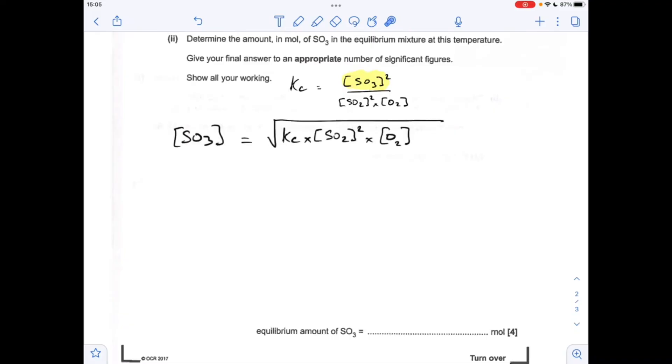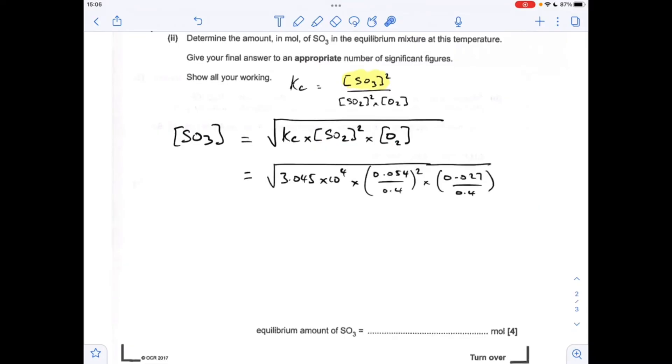Rearranging for SO3 concentration, we get the square root of Kc times the SO2 concentration squared times the O2 concentration. Now remember, in the information in the question, we were told the moles of SO2 and O2, not the concentration. So you can see here I've got the moles divided by the volume. Remember the volume has to be in decimeters cubed. That gives us the concentration of the SO2 and the O2.